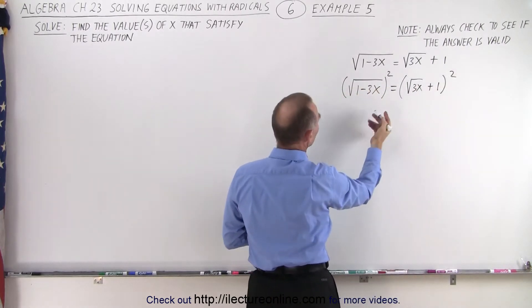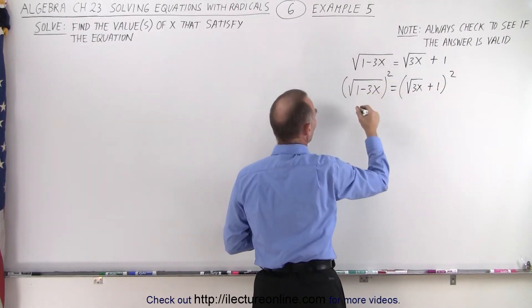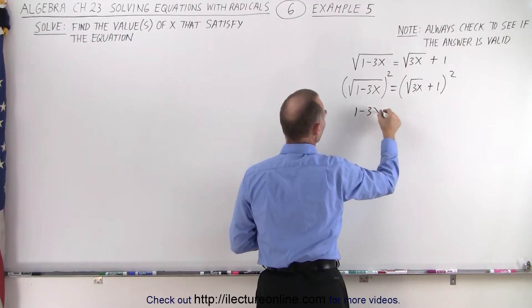Okay, on the left side, that makes it easy. This simply removes the radical. We end up with 1 minus 3x on the left side.